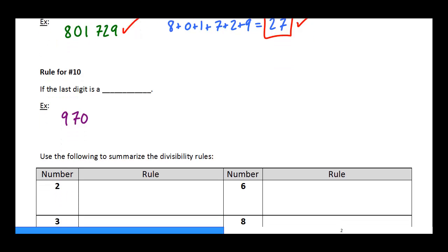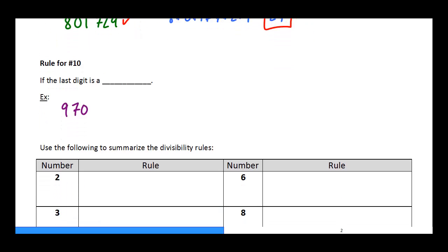And our last rule that you're going to be expected to know is the rule for 10. This is a nice straightforward one. The rule for 10 is simply if the last digit is a 0, then it is divisible. End of story. So 970, yep, it is because that last digit is a 0.